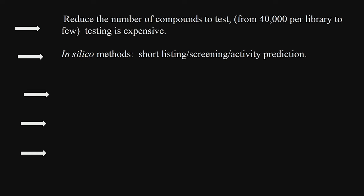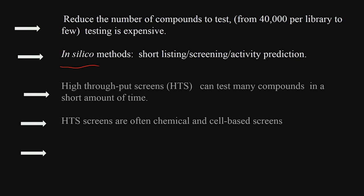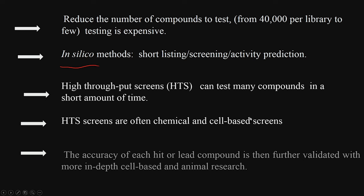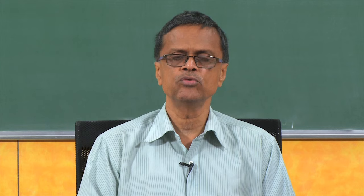This reduces the number of compounds to test from a very large number using computational in silico methods. You can use this as a screening tool — docking a large number of lead molecules to the active site and picking up a few that look promising. That is in silico screening. Then you can use high throughput screening (HTS) to do large numbers of activity studies, saving a lot of time. It could be biochemical-based or cell-based screens.